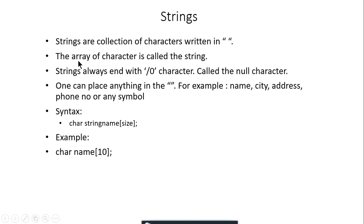To create a string in C language you have to create an array of characters. There is another way using dynamic strings with pointers, but we'll start with the array of characters. Irrespective of the size or length of your array, all strings in C language always end with a null character, represented as backslash zero.